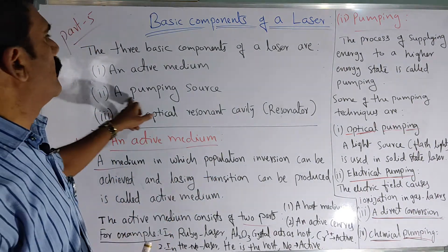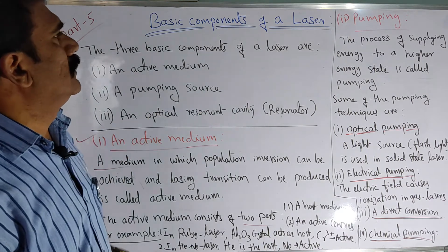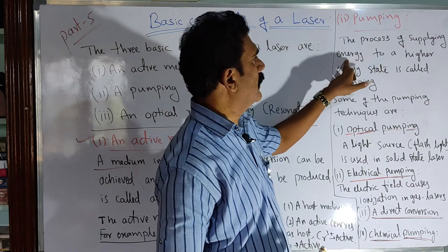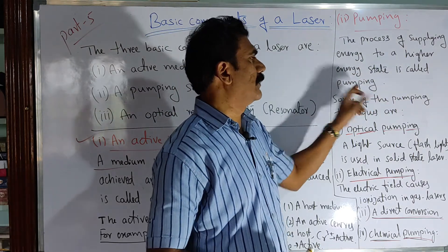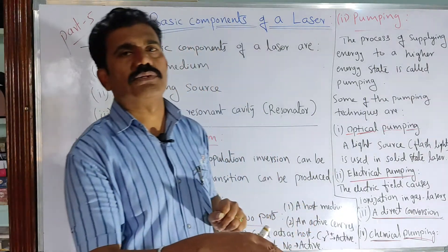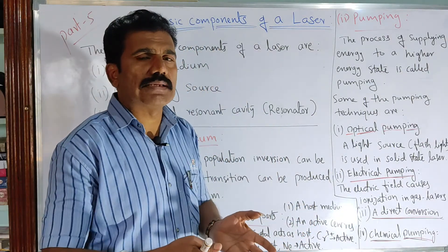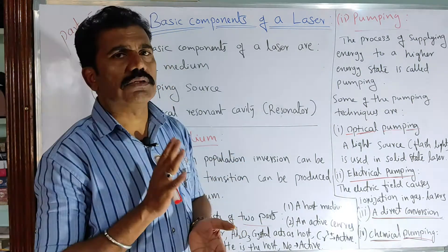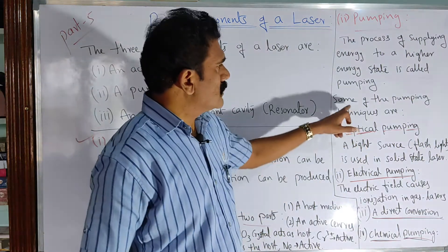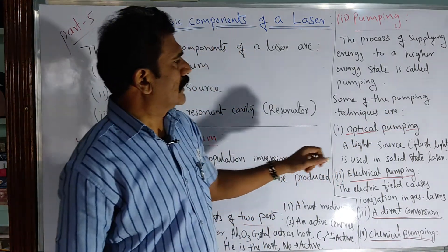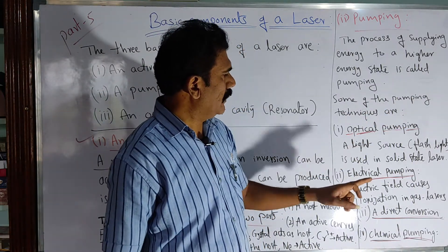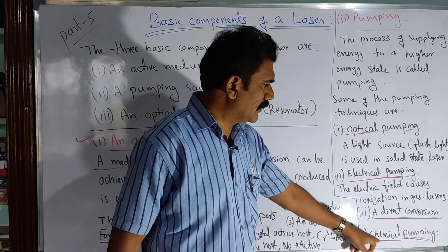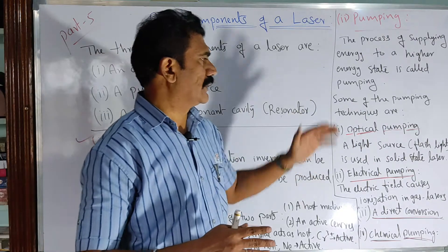The next component is a pumping source. What do you mean by pumping? The process of supplying energy to raise atoms to a higher energy state is called pumping — we need to supply energy so that the atoms excite and go to the excited energy state. Some of the pumping techniques are optical pumping, electrical pumping, direct conversion, and chemical pumping. These are the normally used pumping techniques.